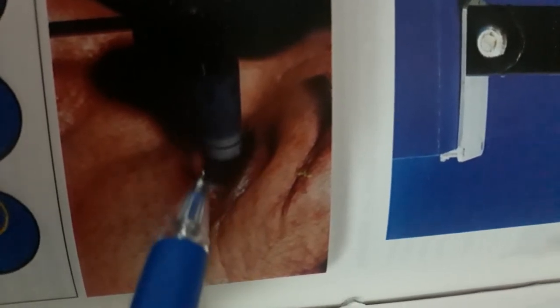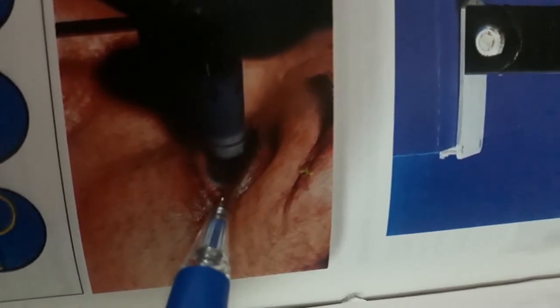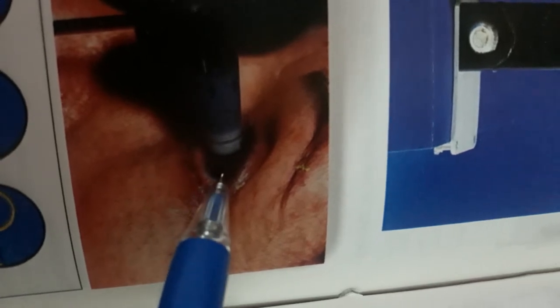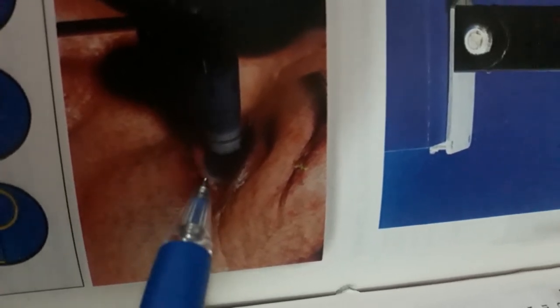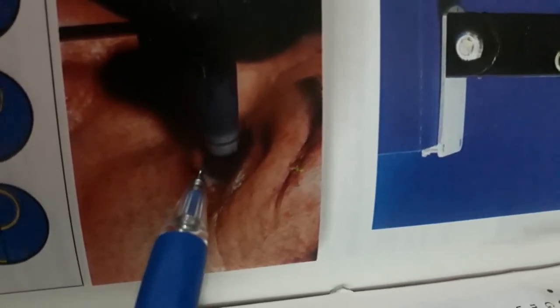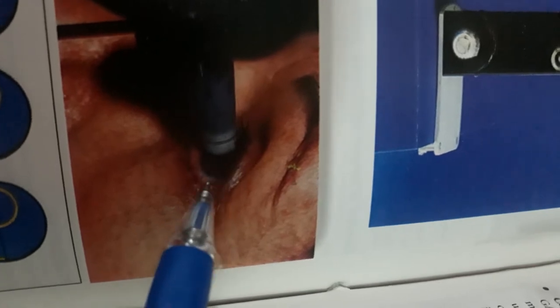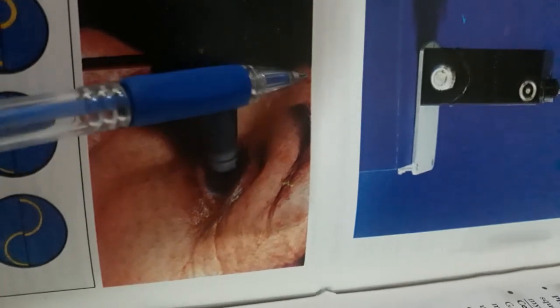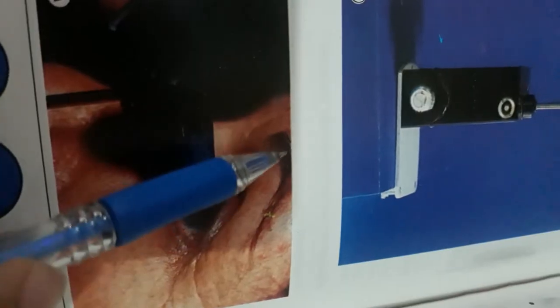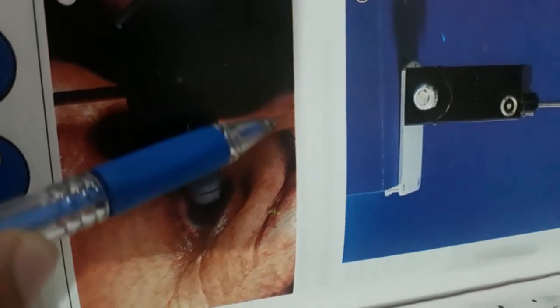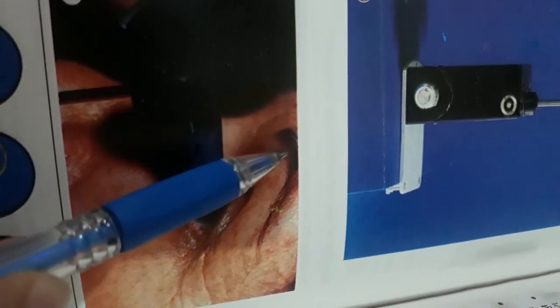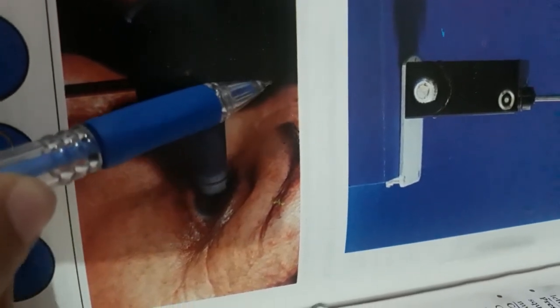Fluorescein is instilled into the conjunctival sac. The patient is positioned at the slit lamp with his or her forehead placed on the headrest.